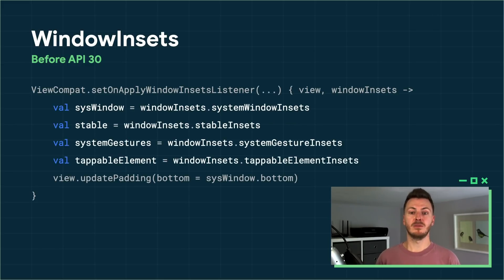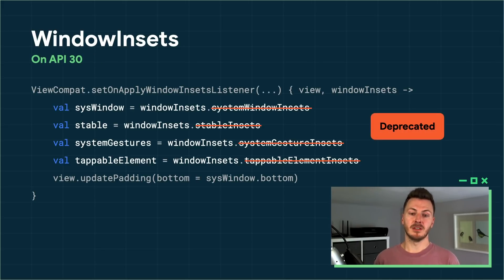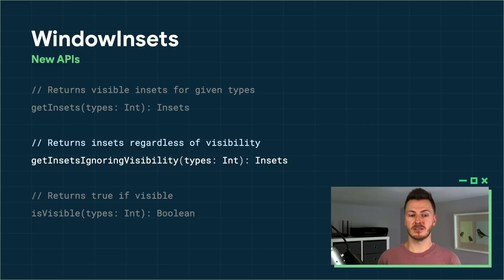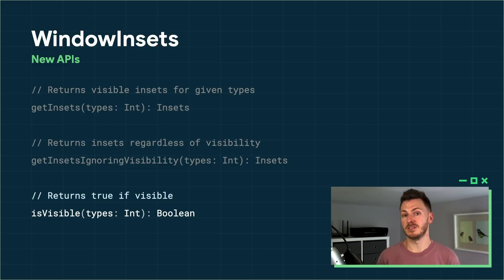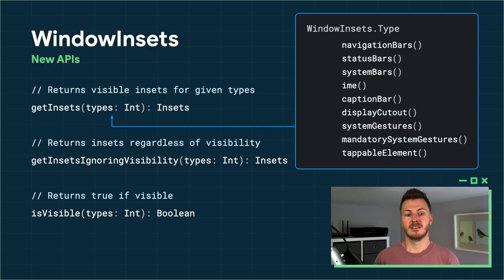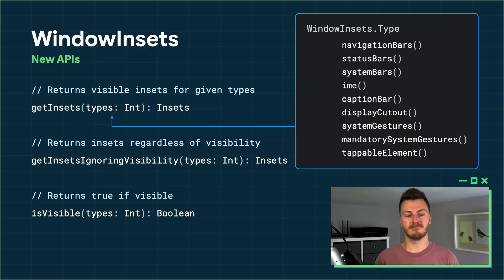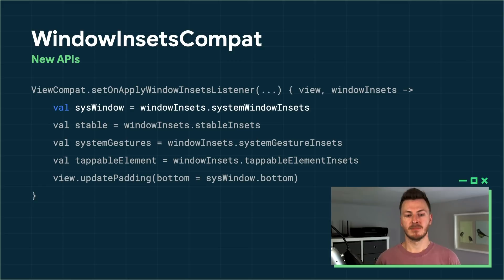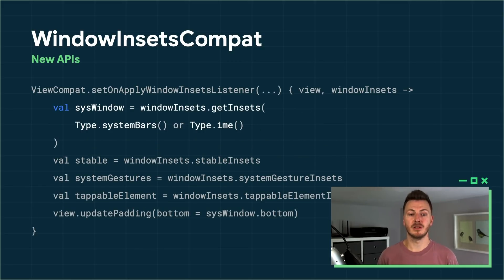There are a number of other inset types available, including the recently added gesture insets. Now on API 30, these have been deprecated. Instead of having individual types as properties, we now have new APIs which allow you to query insets for different types. There are three functions: getInsets, which returns the visible insets for the given types; getInsetsIgnoringVisibility, which returns insets regardless of whether they're visible or not; and isVisible, which returns whether the given type is visible. These types are defined in the WindowInsets.Types class as various functions each returning an integer. You can combine multiple types using a bitwise OR to query for combined types. We also have a Jetpack version available in AndroidX Core.